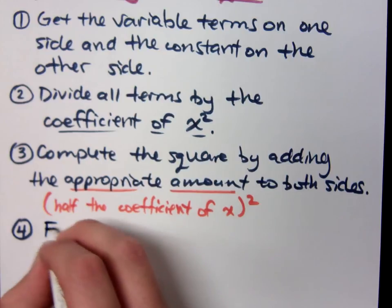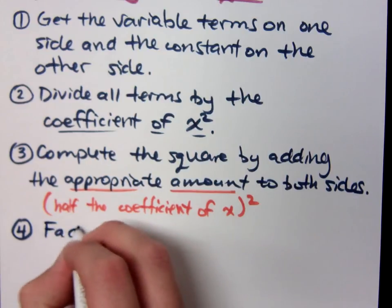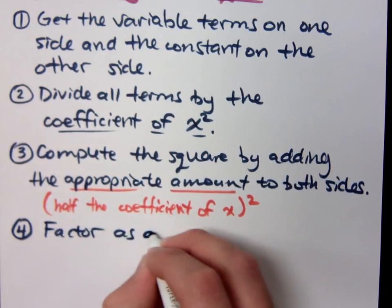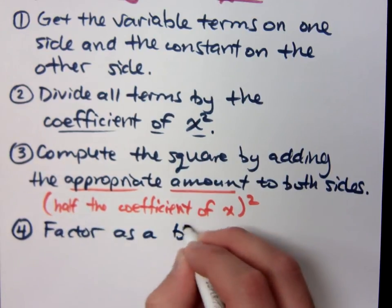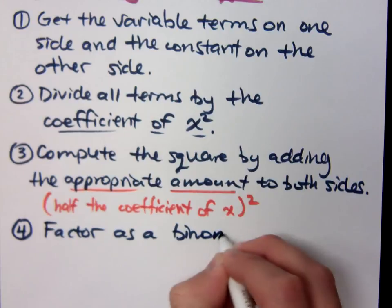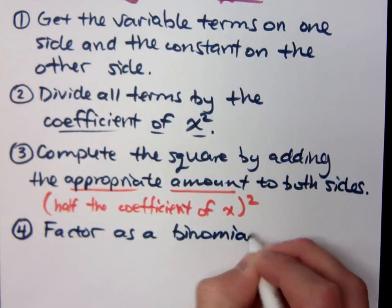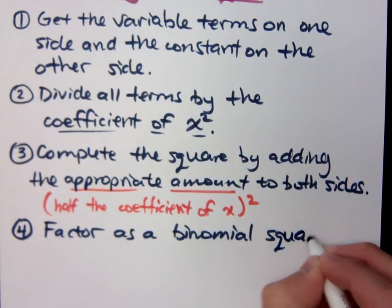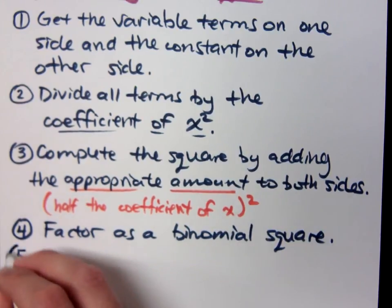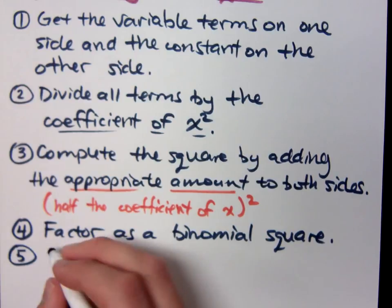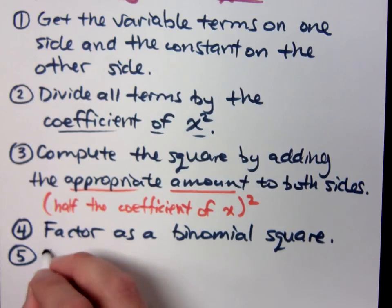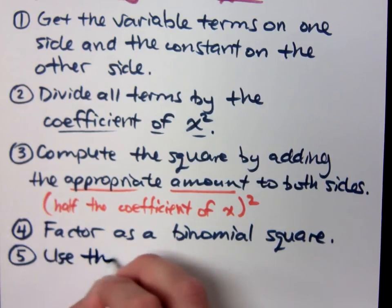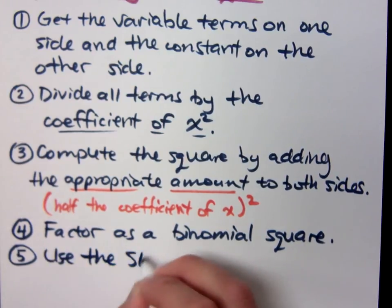You factor the left side — you factor it as a binomial square. That's where you create a square. And once you have created a square, we use the square root property to finish.